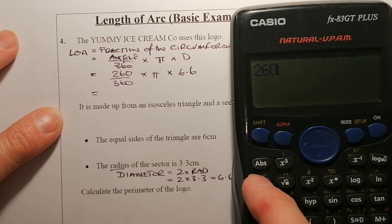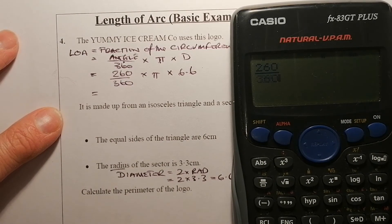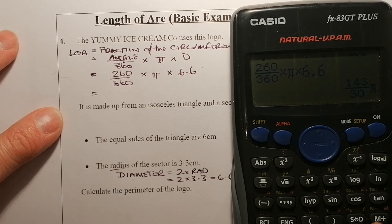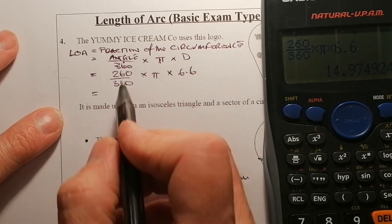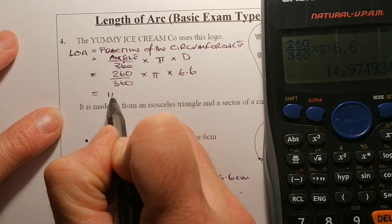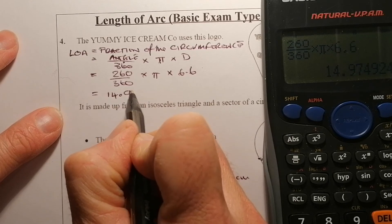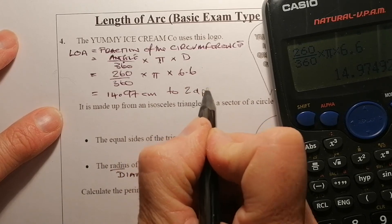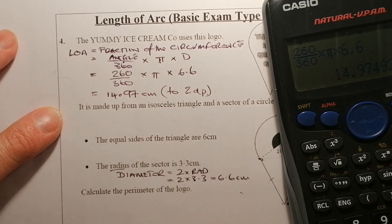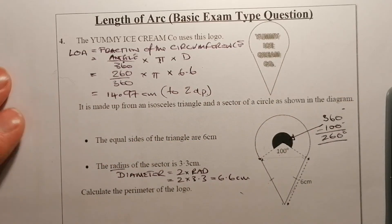Straight into the calculator: 260 over 360, move the cursor in, multiply using the pi button, then times that by 6.6. Pressing the SD button gives the answer to two decimal places: 14.97 centimeters. That's just worked out the length of the arc — from here all the way around the big part of the circle.